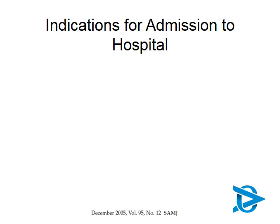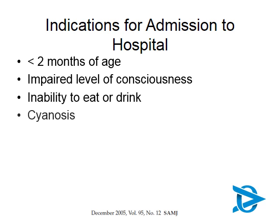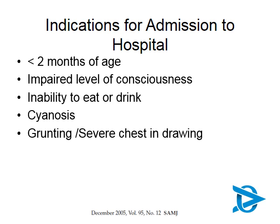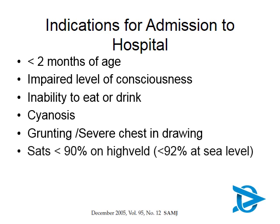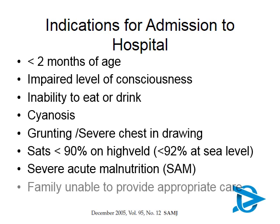When you see a child, the first decision is whether they need hospital admission. Any child under two months with pneumonia must be admitted. Signs indicating a very ill child include impaired level of consciousness, inability to eat or drink, cyanosis indicating very low oxygen levels, and signs of respiratory distress such as grunting or severe chest wall recession. Oxygen saturations of 90% at altitude or less than 92% at sea level on air also warrant admission, as do severe acute malnutrition or social circumstances where the family cannot adequately care for the child at home.